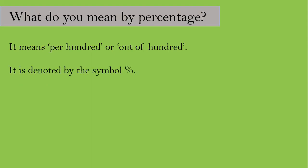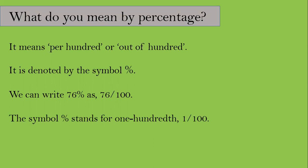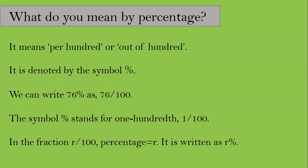Percentage is denoted by the symbol '%'. We can write it as 1 by 100. So 79 percent and 79 by 100 mean the same thing — we can't say both at once. We can write 76 percent as 76 by 100. So the percent symbol means 1 by 100. In the fraction r by 100, the percentage is equal to r, written as r percent.